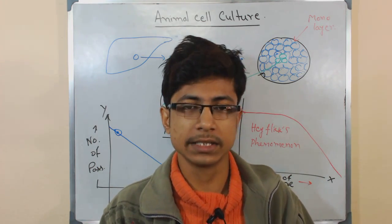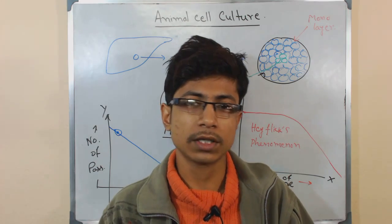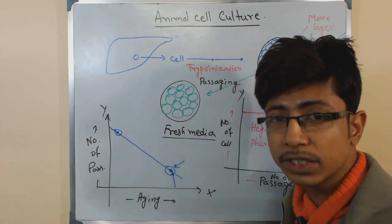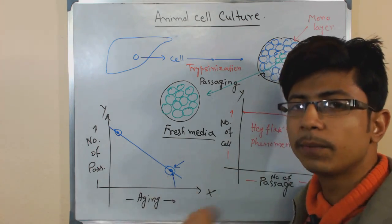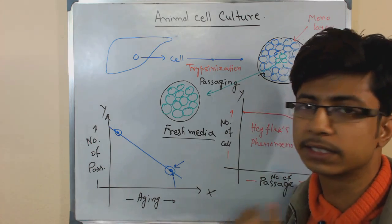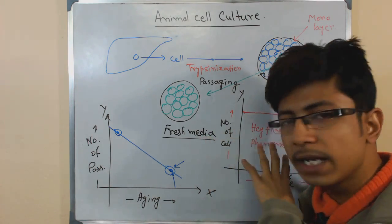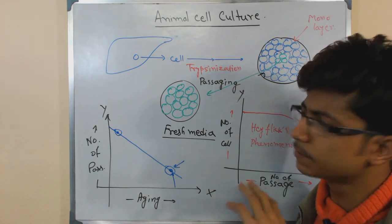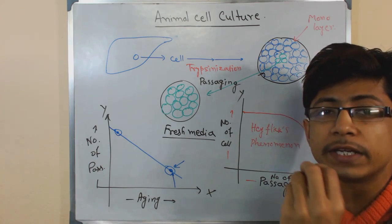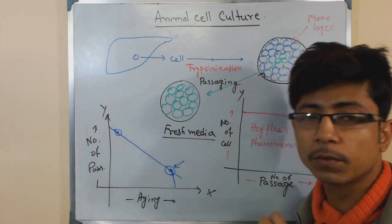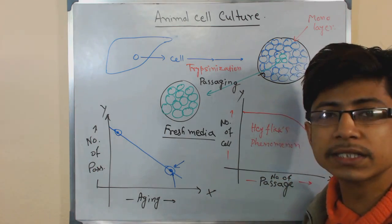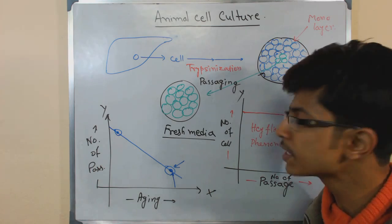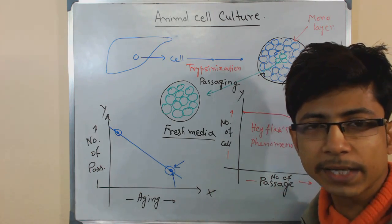For cell culture work, we must be very sure to pick cells that have a high passage number. Developing cell culture techniques is a complicated process requiring a huge amount of time and money, so choosing cells with low passaging capacity would be wasteful. We need cells that can be transferred again and again over time and still grow reliably.